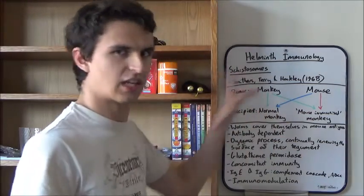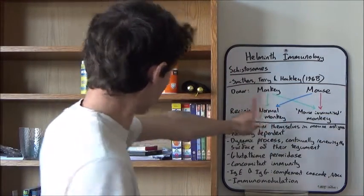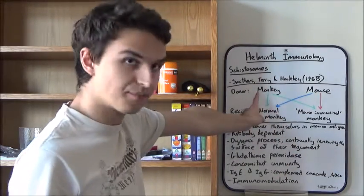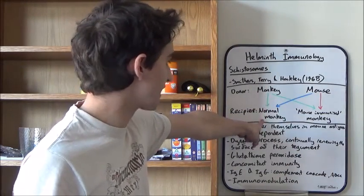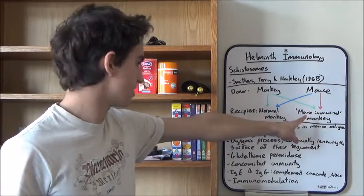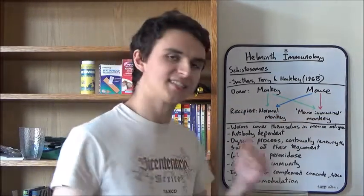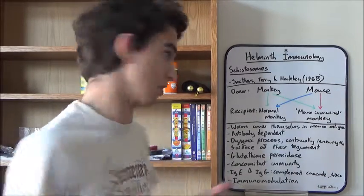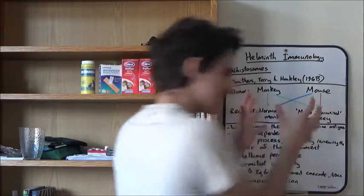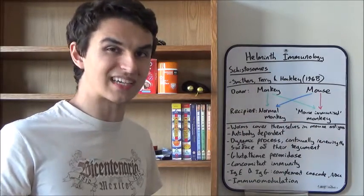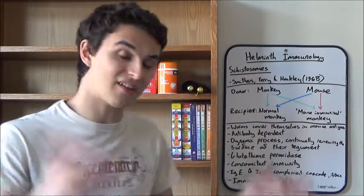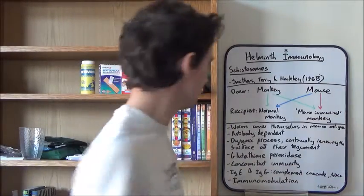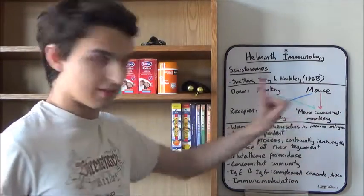So, I've got a nice bit of colour coding here. I've gone a bit crazy, really. So, when the schistosomes of the monkey are placed into a normal monkey and into a mouse-immunised monkey, then that is a successful infection. What I mean by that is, successful from the worms' point of view. They've divided and established themselves in the monkey. Not so good for the monkey because they now have schistosomiasis. But the scientists don't care about that.